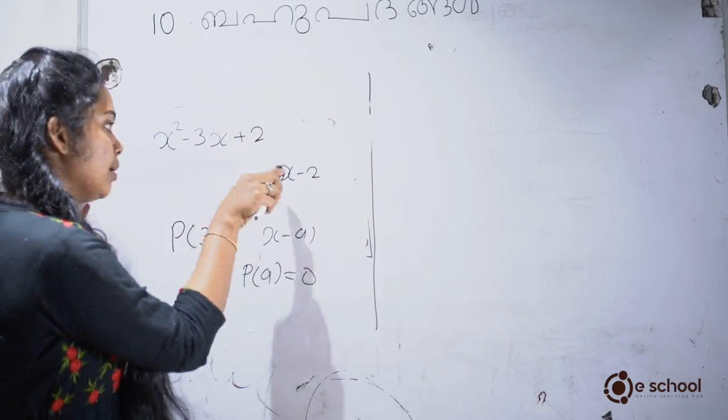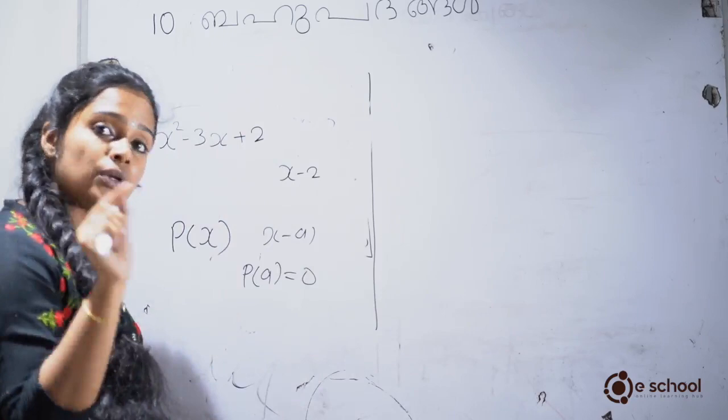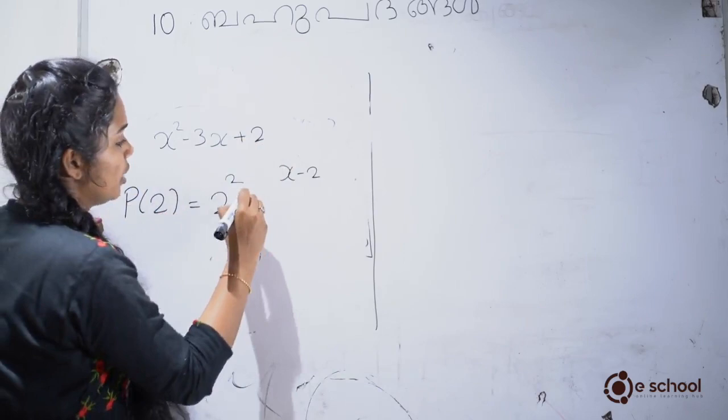What did we say? In this equation, we put 2. When we put the value 0 in this equation, we put this polynomial in the polynomial. Now let's talk — P of 2 is equal to 2 squared minus 3 into 2 plus 2.